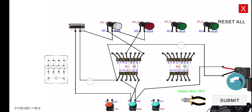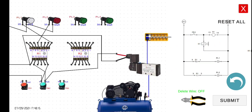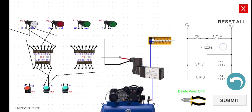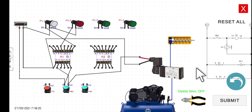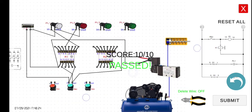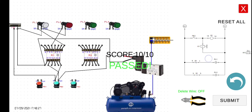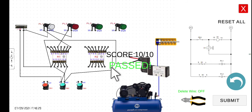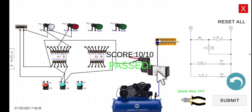Let's zoom out. Let's click the submit button and try to simulate the circuit. Submit — pass! It means that all 10 wires are connected correctly. So again, when we press PB2, the solenoid valve will be activated. Hence, the high pressure from the compressor will be able to flow through the solenoid valve, allowing it to flow to the pneumatic cylinder, and the cylinder will extend.